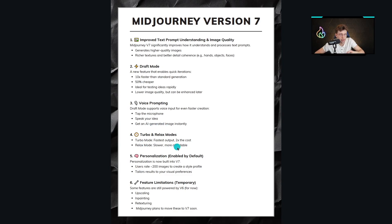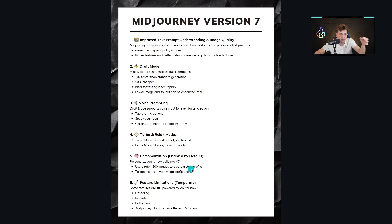We've also got turbo and relax modes. Turbo gives faster output at 2x the cost, while relax mode is slower but more affordable. Personalization is something really new because it's now enabled by default in V7. In other models we could use it, but we had to enable it manually. Now with version 7 it's enabled as a default — you need to rate 200 images, and it tailors results to your visual preferences.